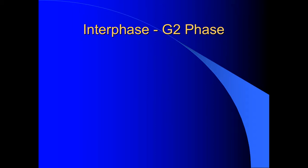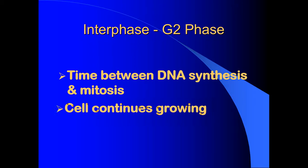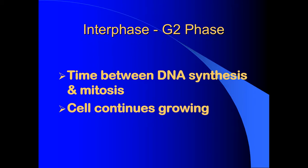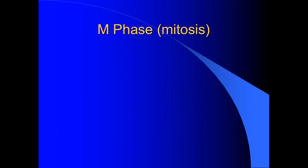The final part of interphase is called the G2, or growth 2, phase. This is the time between DNA synthesis and mitosis. In this phase, your cell goes back to just doing metabolism, continues growing and doing its normal activities. It's also the phase where some needed proteins for the next part of the cell cycle are produced.